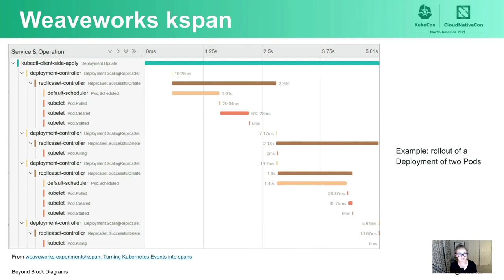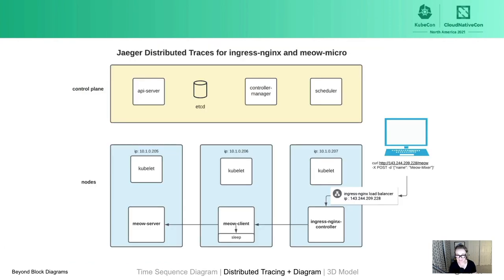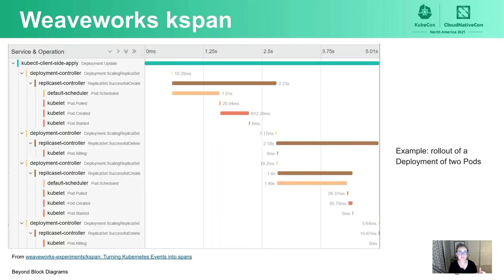I also want to call out a very cool project: a Weaveworks project called K-SPAN, created by Brian Borham. This project uses Jaeger to trace Kubernetes events. In my distributed traces and diagram, I'm tracking an HTTP request that goes into a cluster. But this particular project shows all those events that my time sequence diagram was trying to represent. Check out this project — there is a KubeCon talk about it from 2021, and it's still experimental but something I'm super excited about.